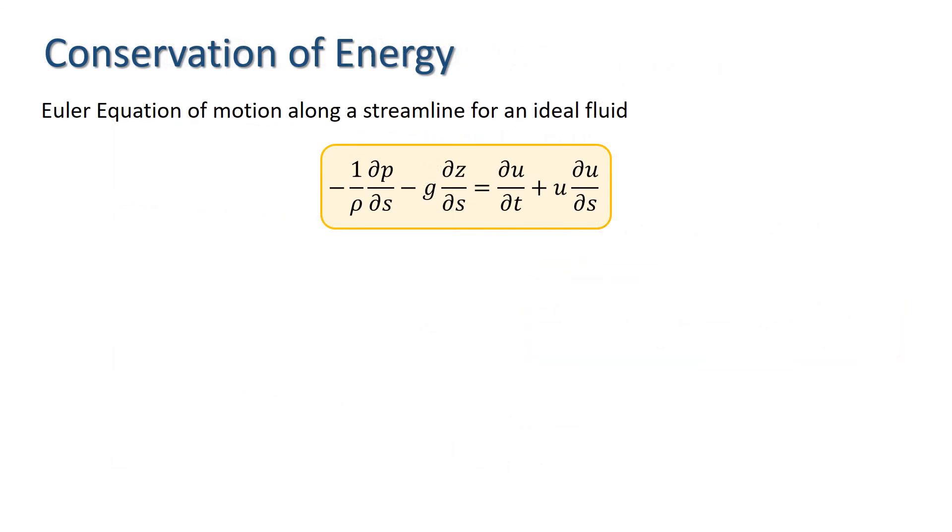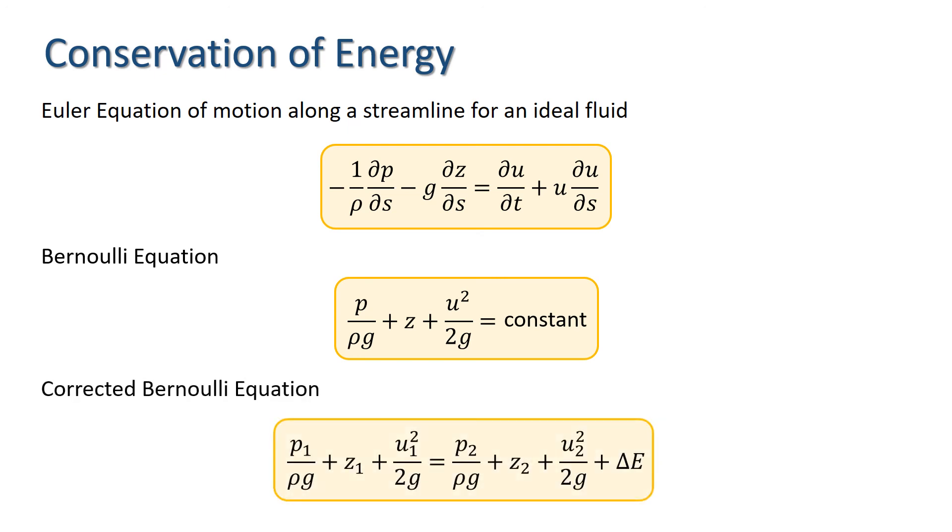To summarize then, we derived first the Euler equation of motion along a streamline for an ideal fluid. In the steady state case, we saw that this simplified to the Bernoulli equation, which has units of energy per unit weight, or meters. Finally, we saw that we can take account of energy losses by writing the equation in the corrected form shown here, which has the delta E term on the right hand side.